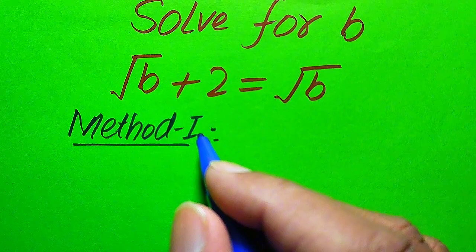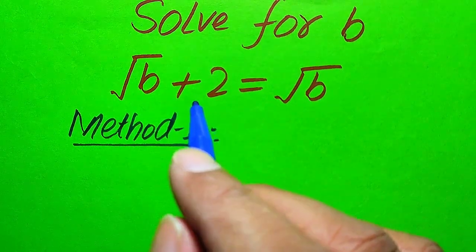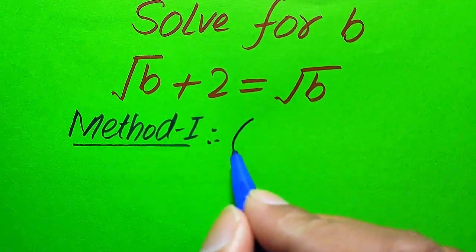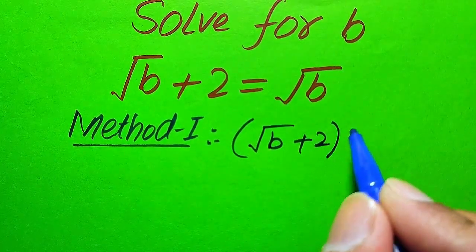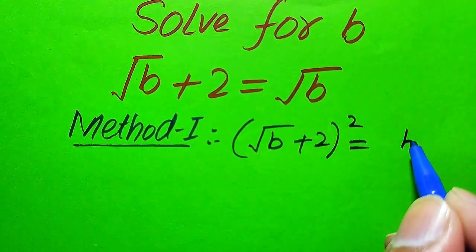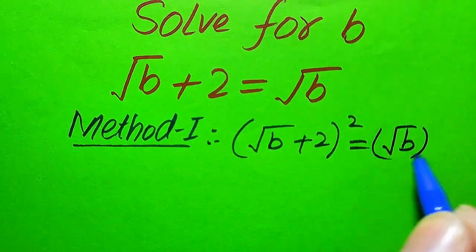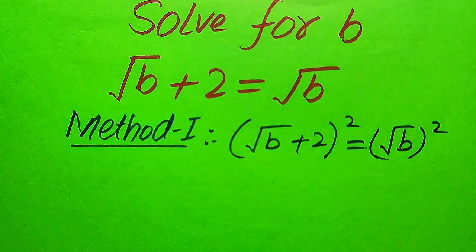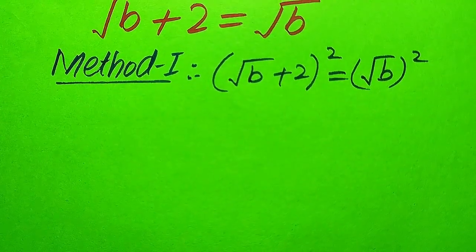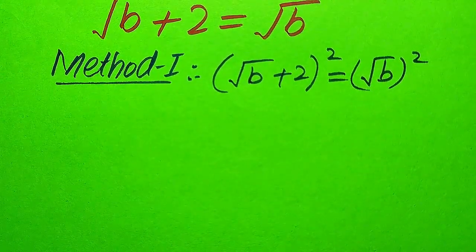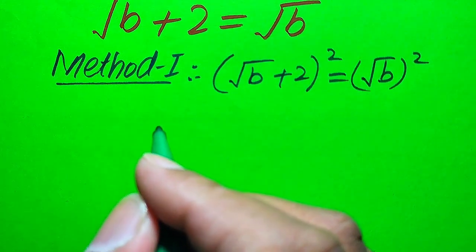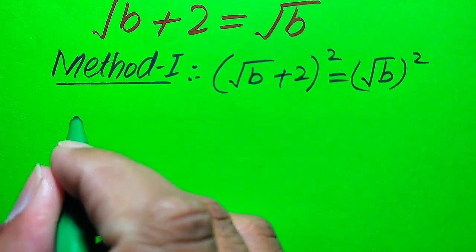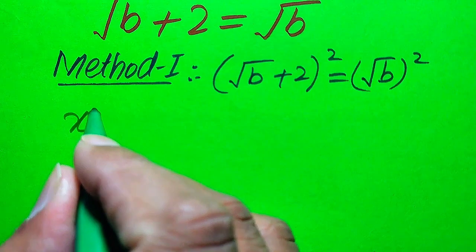We move towards the solution. In the very first step of method one, we square both sides of the equation. So squaring gives us: square root of (B+2), whole squared, equals square root of B, whole squared. In the next step, we use a nice algebraic formula to simplify.